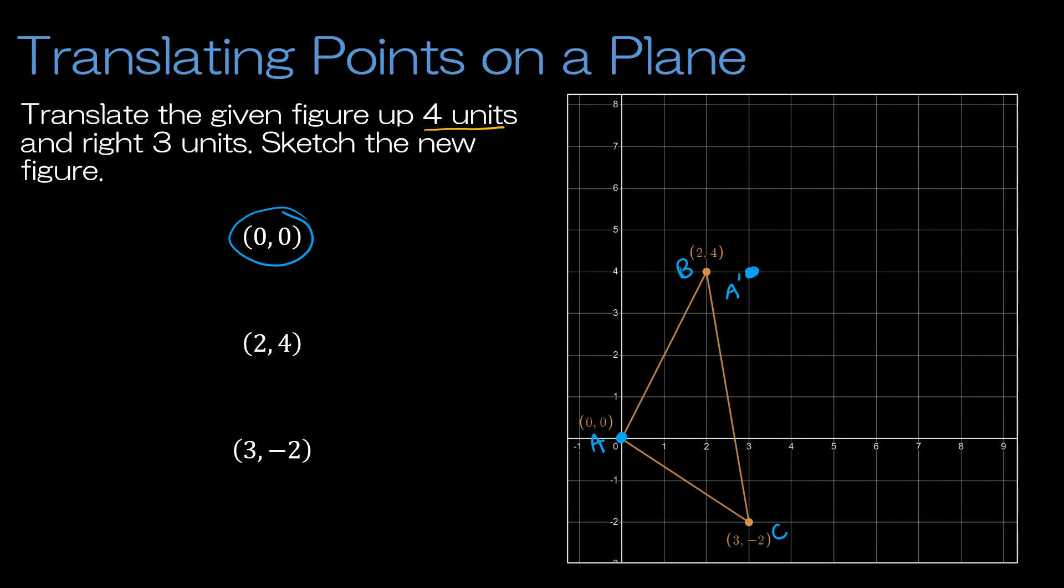4 units up means the y-axis, remember these are (x, y)'s, would be (2, 4). So if I'm moving up 4 units, I would be adding 4. And then to the right 3 units, right is the positive direction, so I would be adding 3. Just make sure you add in the correct order. This was point B, so my new point B should be at (5, 8). So (5, 8) is right here, and that's B prime.